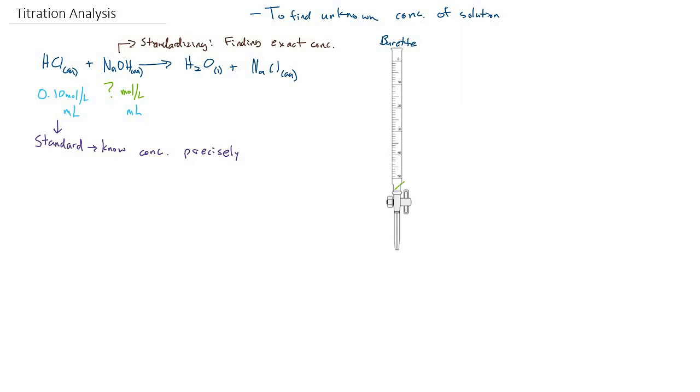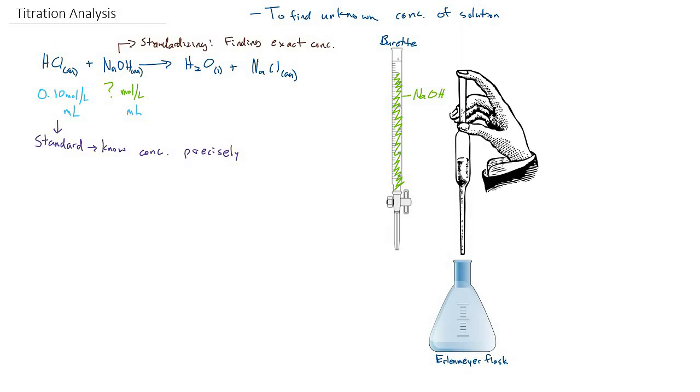For our example, let's suppose this thing is filled with sodium hydroxide. Next, we're going to grab an Erlenmeyer flask. And in our flask, we have to put a precise amount of hydrochloric acid. It doesn't really matter what that amount is, as long as we're very precise about it.